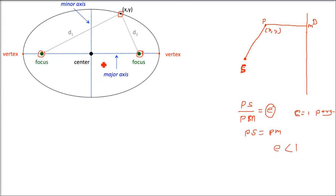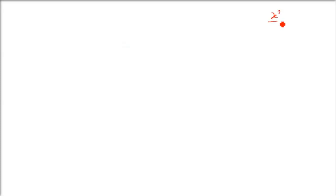This is the major axis and this is the minor axis. Wherever the ellipse touches the x-axis in the horizontal case, those are called vertices. The two points on the y-axis are called co-vertices. The center is at (0,0) in normal cases, but that will change depending on the situation. We want to find the equation of an ellipse, which is x²/a² + y²/b² = 1, and we are going to prove it.